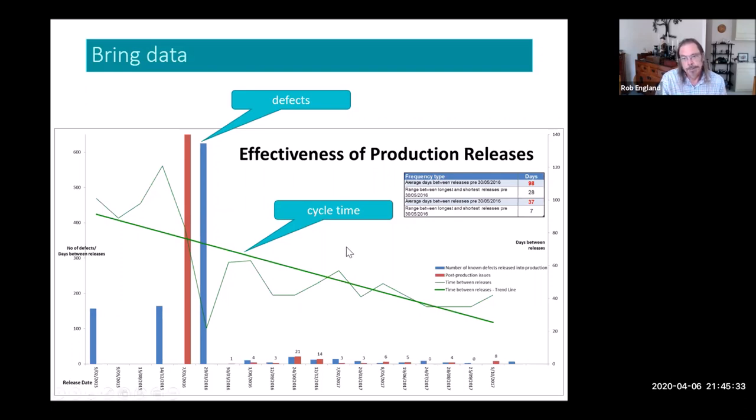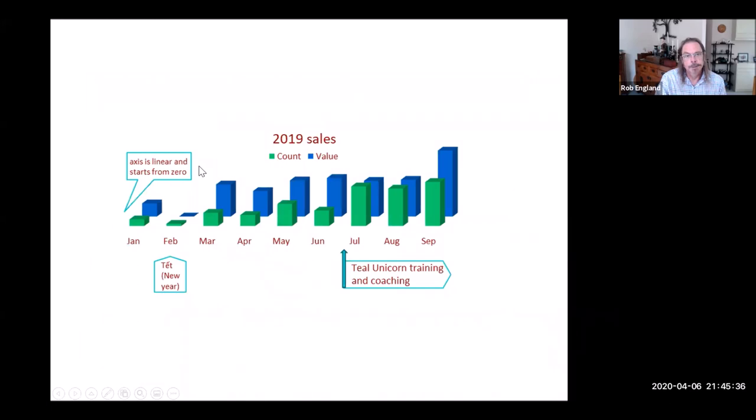This is another one of our clients. This is showing the number of sales in green and the value of sales in blue for a sales oriented organization. And it's starting from zero. It's not chopped or anything. So they're Vietnamese. So February is a disaster, like Christmas is a disaster in Western countries. And they were pretty flat and struggling. And then we got them working, new ways of working. And within months, the graph took off.